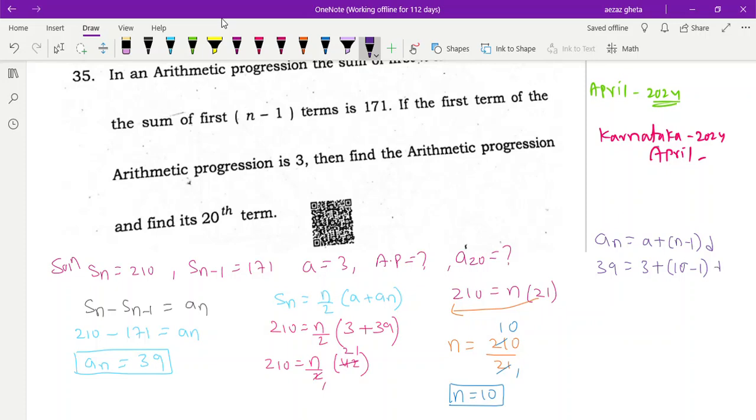So this if I take here I will get 39 minus 3 is equal to 10 minus 1, 9d, correct. This 9 I should take here, I will get d is equal to 39 minus 3, 36 by 3, ones are 3, ones are 2s. d we got it, 4. Am I right boys and girls?